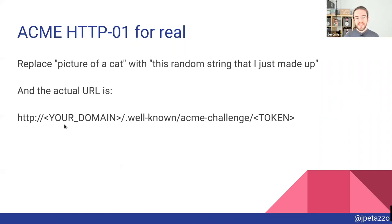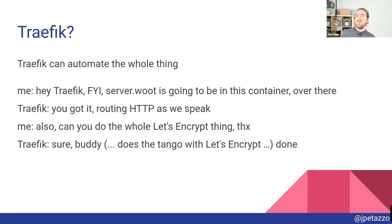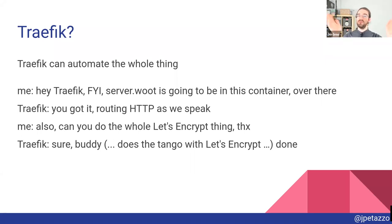Let's Encrypt tells you: put some secret number it just generated at a specific address, then it makes a request to check it's really you. That's how it works. Where does Traefik come into play? Traefik can automate the whole thing for us. There's a magic switch you enable in Traefik, and when you say you want TLS on your sites and apps, it does the whole thing on our behalf — contacts Let's Encrypt, Let's Encrypt says put the cat picture with the purple bow tie, Traefik does it for us, and moments later we have our certificate.